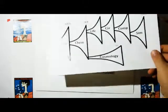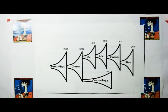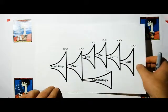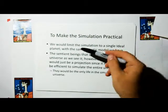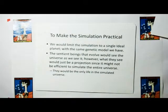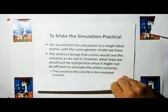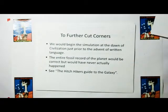To make the simulation practical, because one of the problems we run into is there's infinite possibilities over every echelon here, we want to kind of limit this thing so we can actually get to a solution within our lifetime on the computer simulation. So we're going to limit the simulation. We're going to limit to a single ideal planet and use the same genetic model we have. The sentient beings that evolve would see the universe as we see it. However, what they see would just be a projection in the distant universe, since it might not be efficient to simulate the entire universe, and they would be the only life in the simulated universe. Why complicate their life with meeting other civilizations? And further cut corners, we would probably begin the simulation at the dawn of civilization, just prior to the advent of written language, and therefore the entire fossil record of the planet would actually be correct, but it would be implemented up to that point. It'd be like an initial condition, but it would never actually happen.